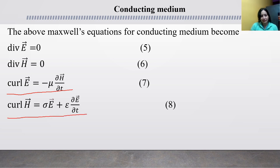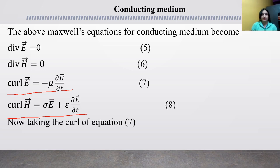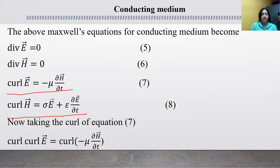So we will take the curl of equations 7 and 8. Taking the curl of equation 7: curl curl E equals curl of minus mu del H over del t. Since curl and del over del t are both operators, we take the curl of del H over del t, which equals minus mu times del over del t of curl H.